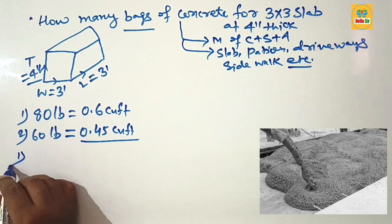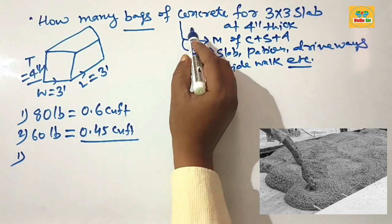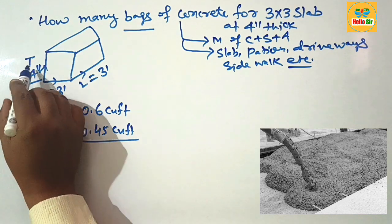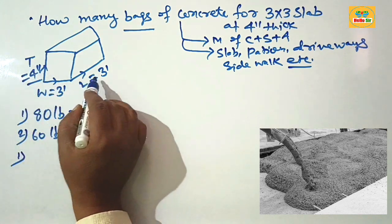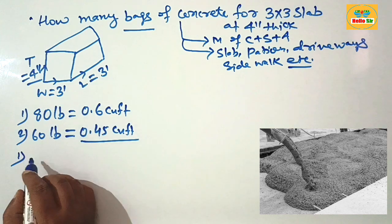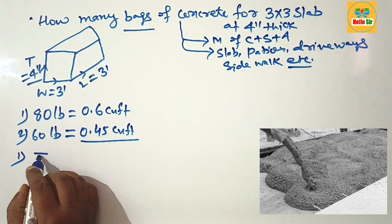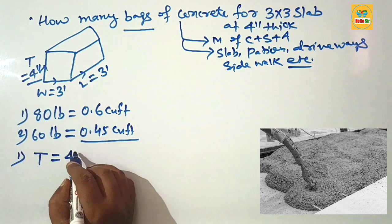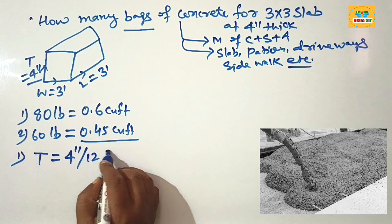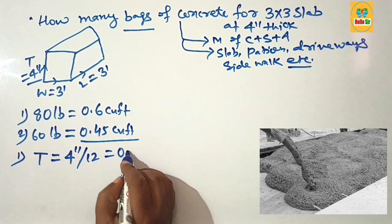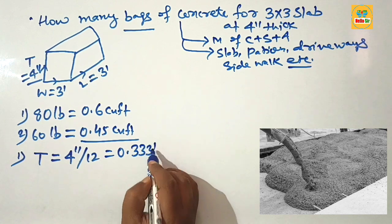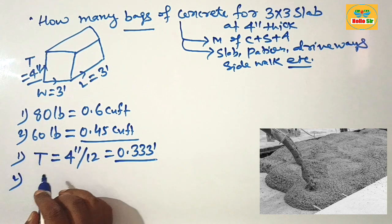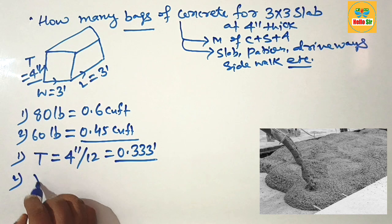First, determine the concrete volume in cubic feet by multiplying length, width, and thickness in feet. You need to convert the thickness to feet: 4 inches divided by 12 equals approximately 0.33 feet.